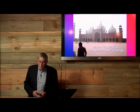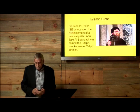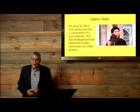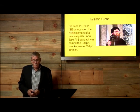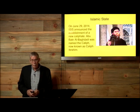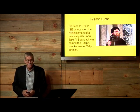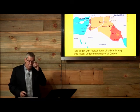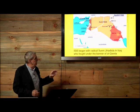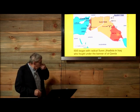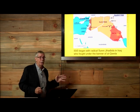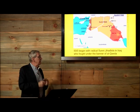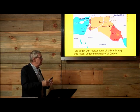Some of the modern complexities with radical Islamic terrorists: The Islamic State — on June 29th, 2014 — ISIS announced the establishment of the new caliphate. Abu Bakr al-Baghdadi was named the caliph, now known as Caliph Ibrahim. You can see on the map here Iraq. ISIS began with the radical Sunni, so realize that ISIS, Sunni Jihad — they're kind of under the same banner. The brown area on the left side is actually part of the Shiite — they're called the Twelvers. We'll talk about that later.